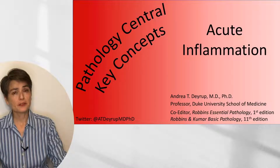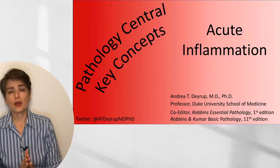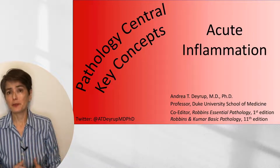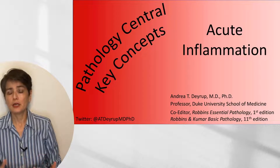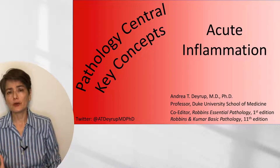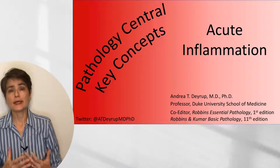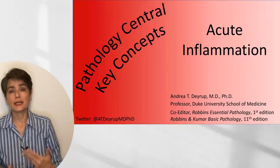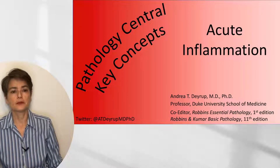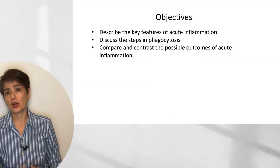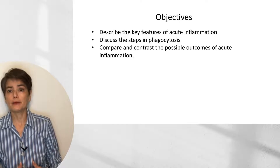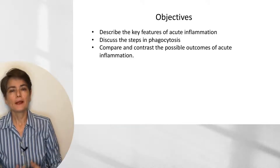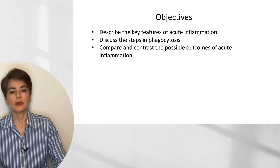Welcome to Pathology Central Key Concepts. The topic of this video is acute inflammation. This covers material in Chapter 2 of Robbins and Kumar Basic Pathology and is part of the general pathology foundational material. The goal is to provide an understanding for the material you will see again and again in the different organ systems. I'm going to begin by describing the key features of acute inflammation, discussing the steps and processes of phagocytosis, and then compare and contrast the possible outcomes of acute inflammation.